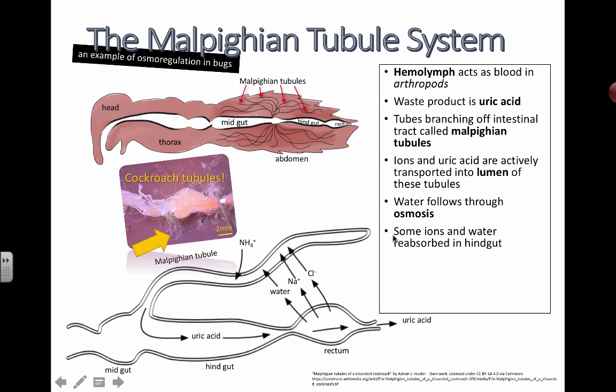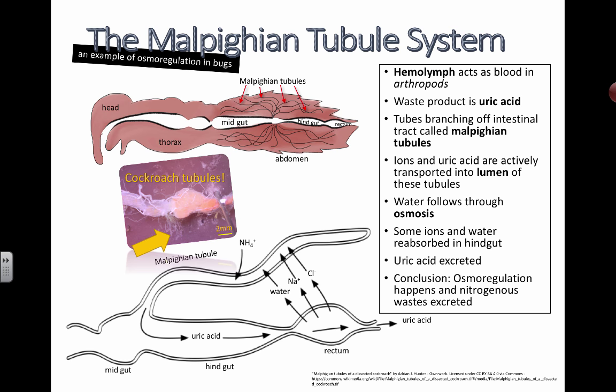That is part of the osmoregulation — we don't allow too much water to go out because water will balance out by moving to where there's a higher solute concentration, where water moves to saltier locations. Some ions and water are reabsorbed in the hindgut. A lot of the water is going to be drawn out to follow the salts that have been pumped into this area as well. Uric acid is going to go all the way through — we're not trying to reabsorb uric acid back into the hemolymph. Uric acid is the poisonous stuff that's the result of protein metabolism. For us, it's urea.